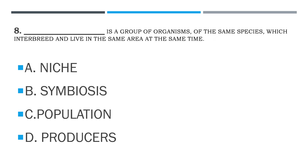Number 8. Blank is a group of organisms of the same species which interbreed and live in the same area at the same time. A. Niche. B. Symbiosis. C. Population. D. Producers.